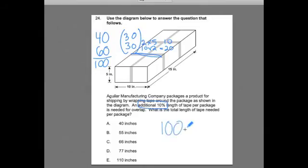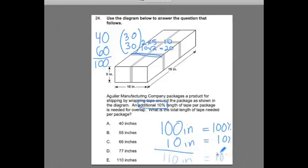Well, if it's 100 inches just to go around, I need 10% more. 10% of 100 is just 10. And if this is 100%, 10% of 100% is equal to 10 inches. So 100 plus 10 inches is equal to 110%.